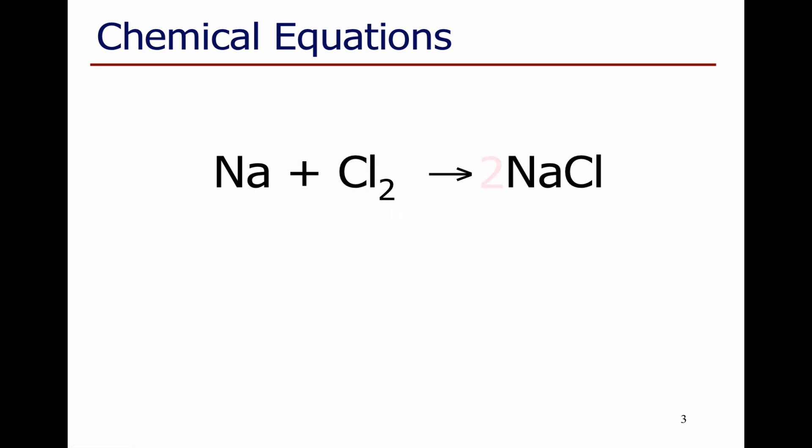So I must actually be making two NaCls for every chlorine molecule, so that the two at the front here means I have two lots of sodium chloride, two lots of Cl in my NaCl, matching the two chlorines that I had in my chlorine molecule to start with. But I've still got a problem.